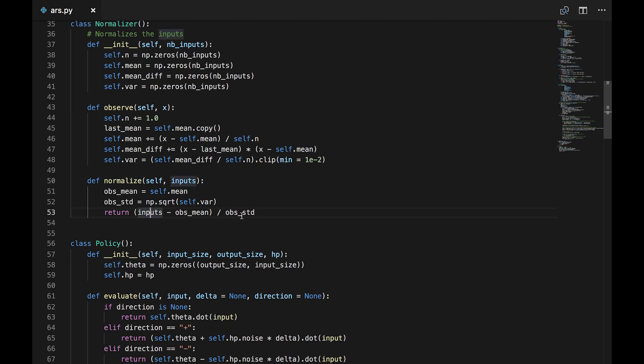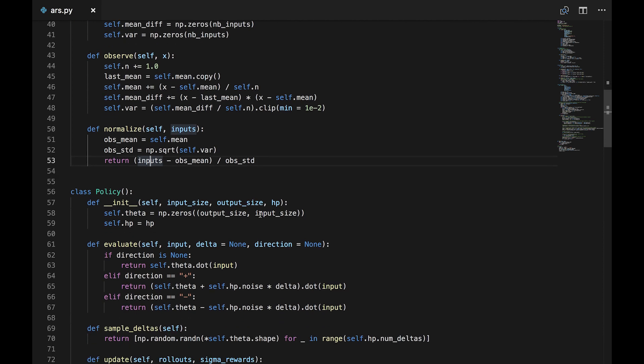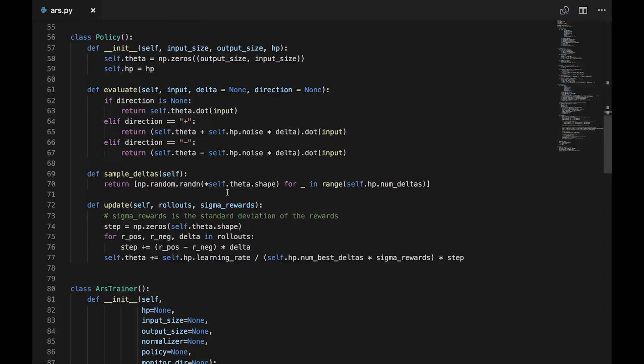The normalize function subtracts the observation mean from the current input and divides by the standard deviation. Moving down to the policy class. This is responsible for generating random noise, updating the policy from the rollouts, and turning input into actions. The init function creates a matrix of the correct size with initial weights all set to 0. The evaluate function turns input into actions.